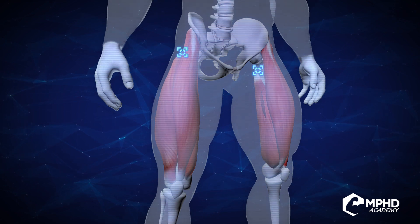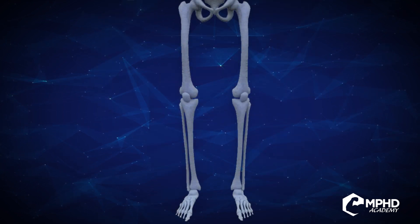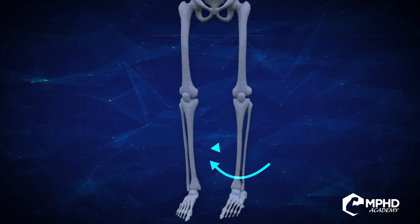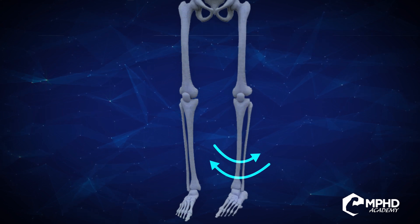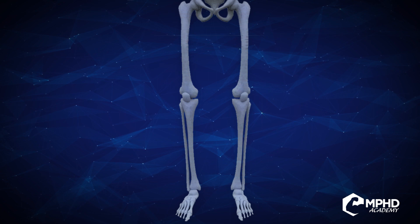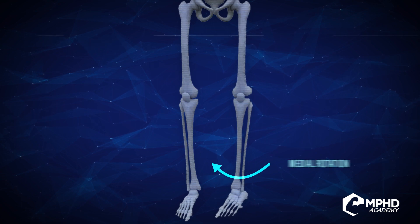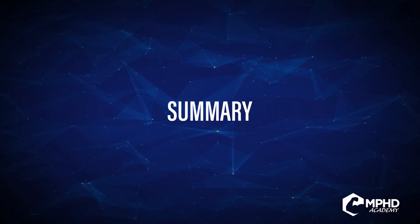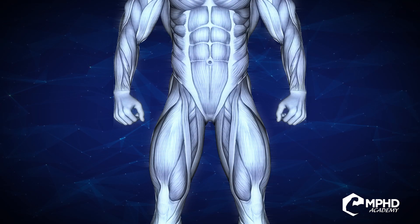The quads can rotate the knee inwards, which we call medial rotation, or outwards, which we call lateral rotation.